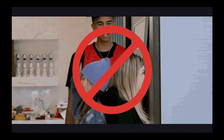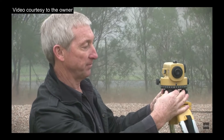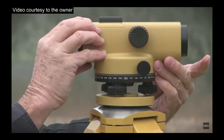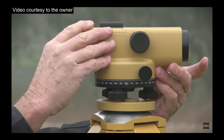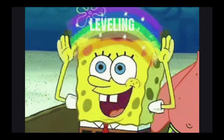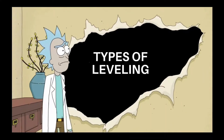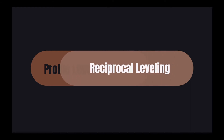Leveling is a branch of survey to measure a height of specified relative points to a datum. It is the process of directly or indirectly measuring vertical distances to determine the elevation of points or their differences in elevations. There are three types of leveling: differential leveling, profile leveling, and reciprocal leveling, which will be discussed next by the reporter.